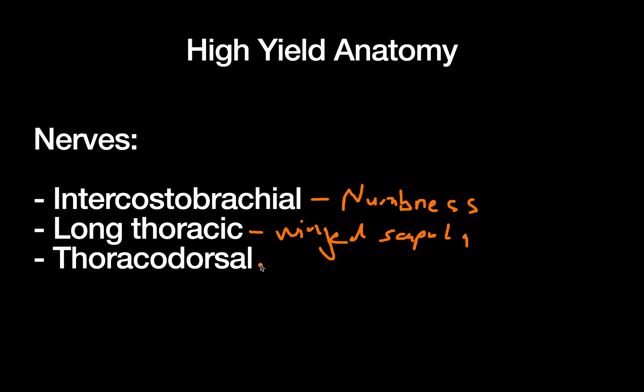Finally we have the thoracodorsal. This innervates the latissimus dorsi and can lead to issues with extension, adduction, and internal rotation via the latissimus, leads to weakness there. I always found it hard to remember all those together, but something I heard recently was that if you've injured your thoracodorsal nerve you're gonna have trouble wiping your butt. There you go, extension, adduction, internal rotation all together, hopefully that helps you remember that.